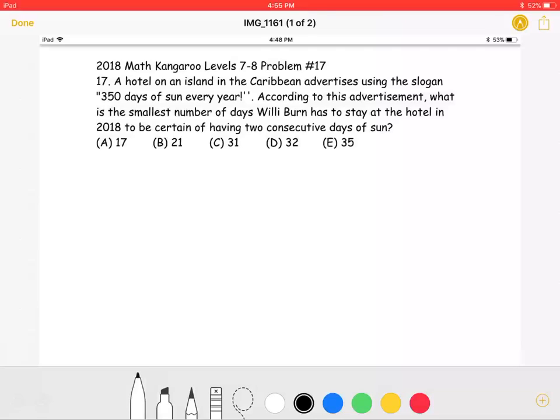This is the 2018 Math Kangaroo Levels 7-8 Problem No. 17. A hotel on an island in the Caribbean advertises using the slogan, 350 days of sun every year.